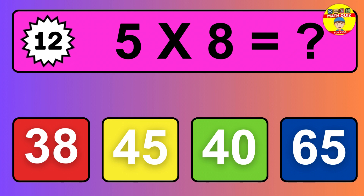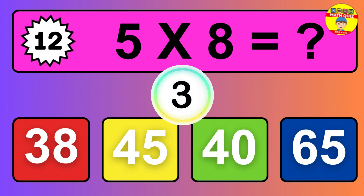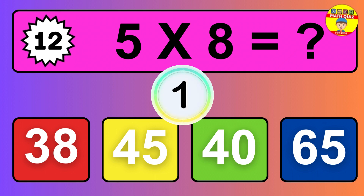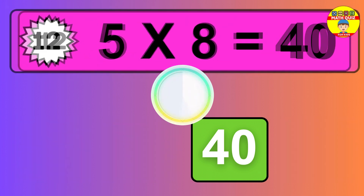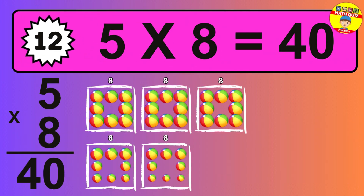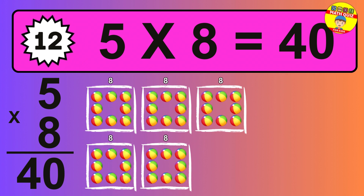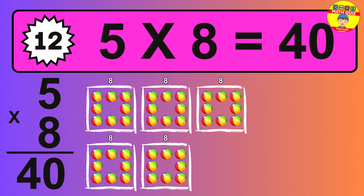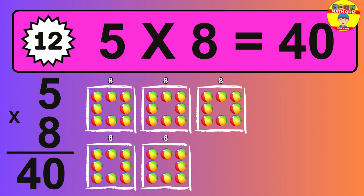Question twelve. Five times eight equals what? So the answer is five times eight is 40. To calculate, we have five groups with eight balls each one. So how many balls do we have? 40 balls.